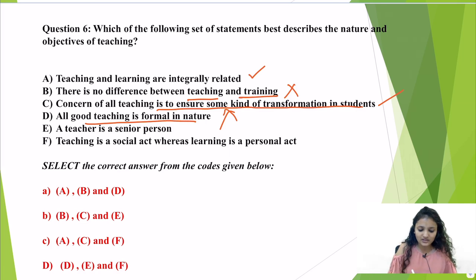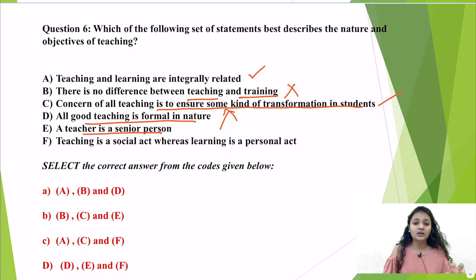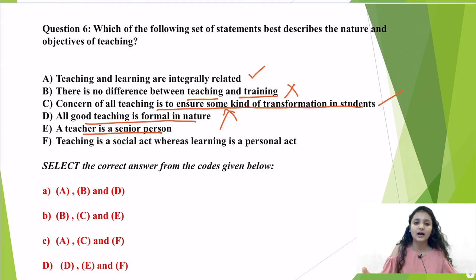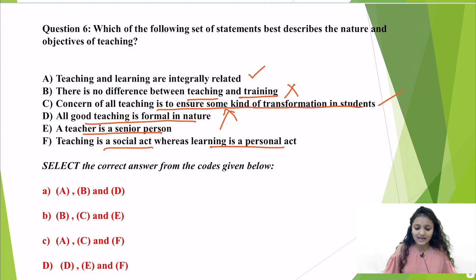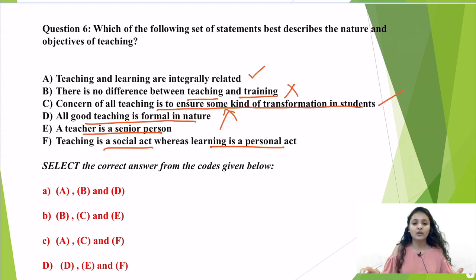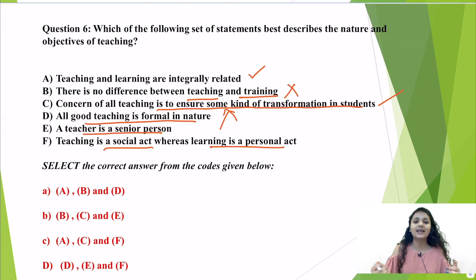Part E: 'A teacher is a senior person' — this is not always true because a teacher does not have to be a senior person; a teacher could be anyone with knowledge who can provide teaching to others. Part F: 'Teaching is a social act whereas learning is a personal act' — this is true, because a teacher is a mediator between the student and the knowledge, whereas learning is a personal act for everyone's own benefit.